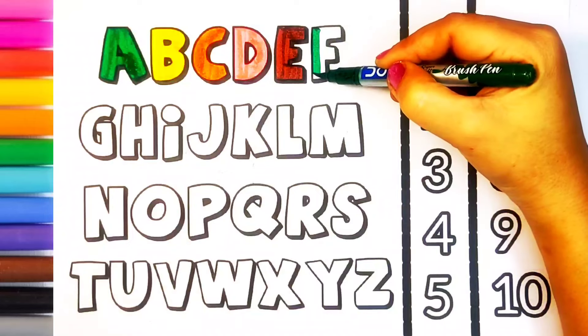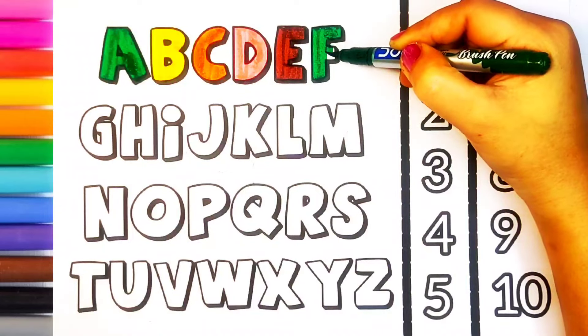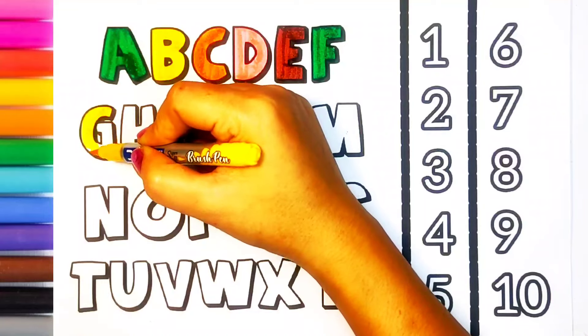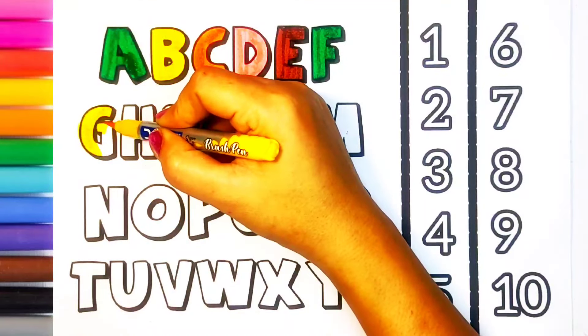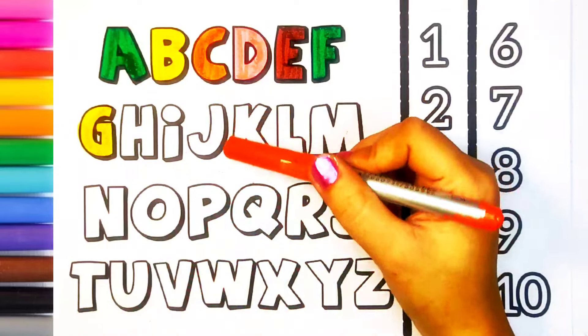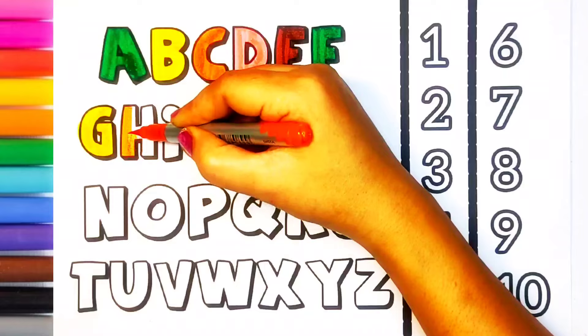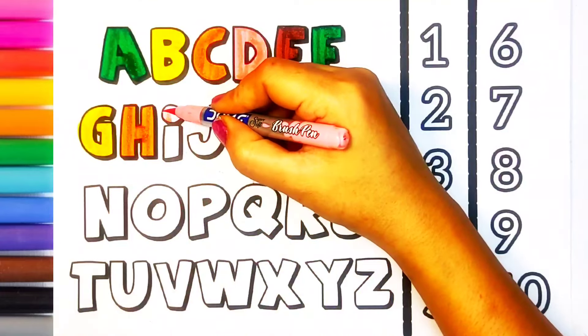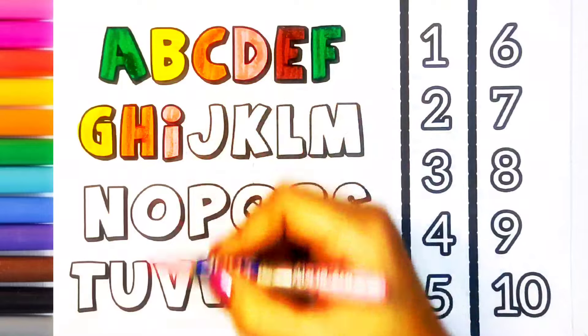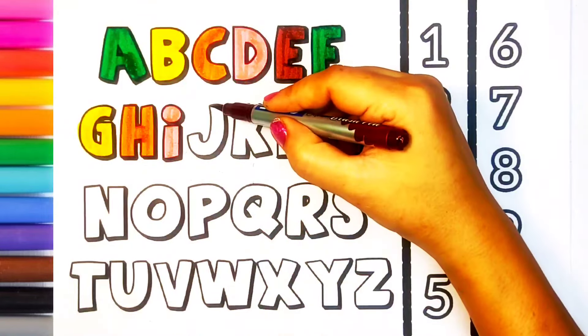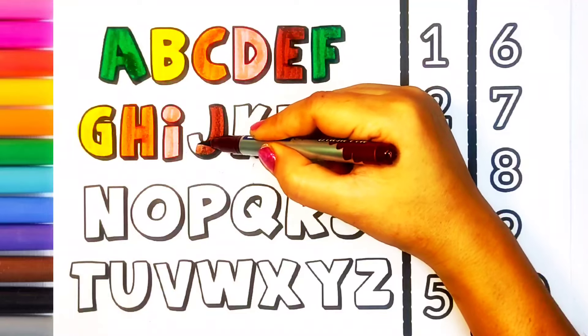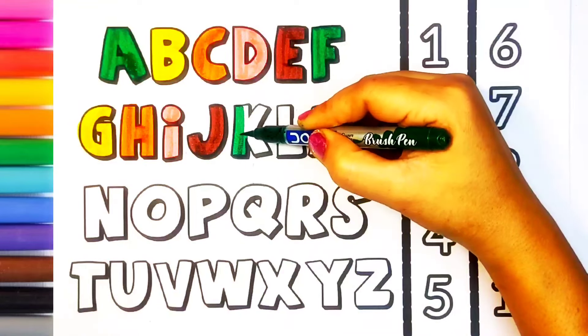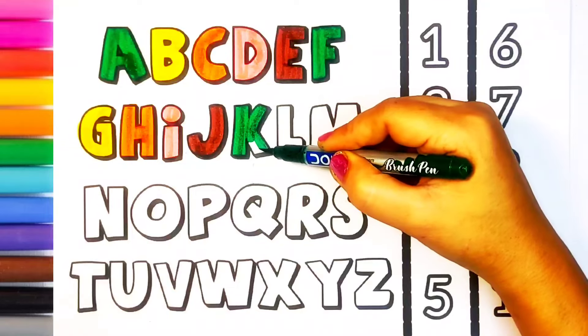Pink color, D, D for doll. Brown color, E, E for elephant. The green color, yellow color, F, F for fish. Yellow color, G, G for goat. Orange color, H, H for hen. Pink color, I, I for island.